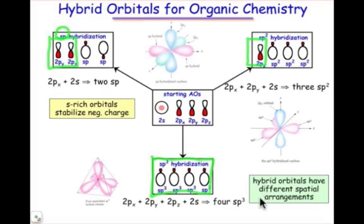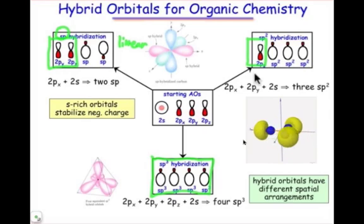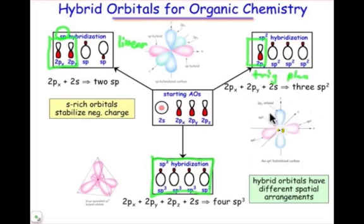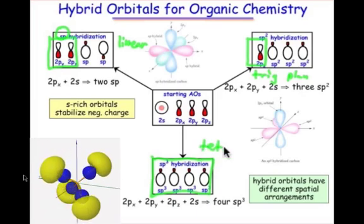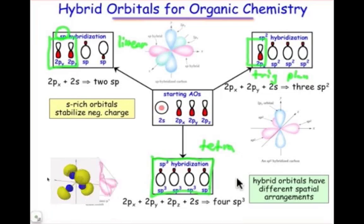The hybrid orbitals have these different spatial arrangements. sp hybrid orbitals are ideal for linear geometry. The sp2 hybridization is ideal for trigonal planar geometry. The sp3 is ideal for tetrahedral geometry. And so that's pretty much what we need to know about hybrid orbitals.